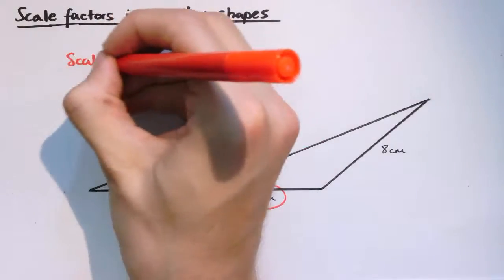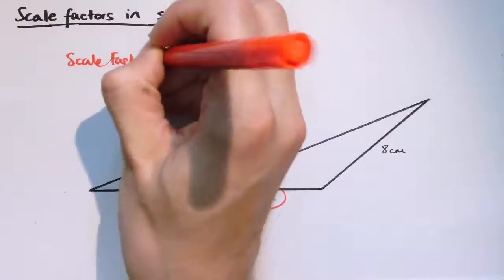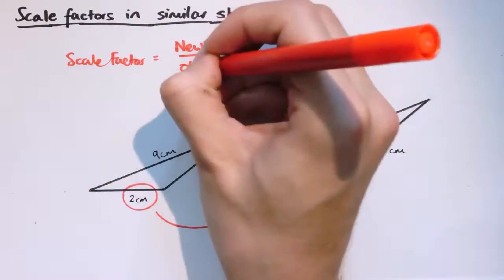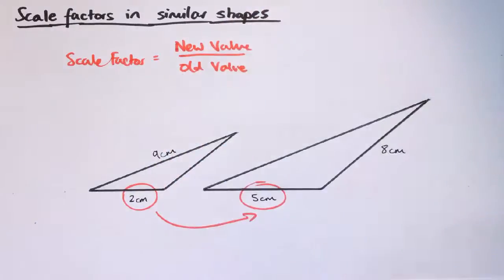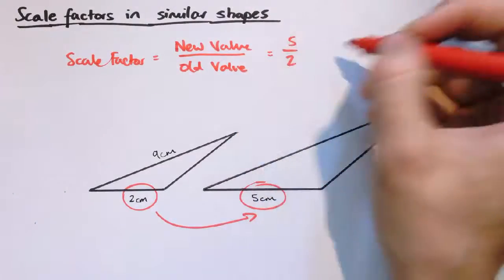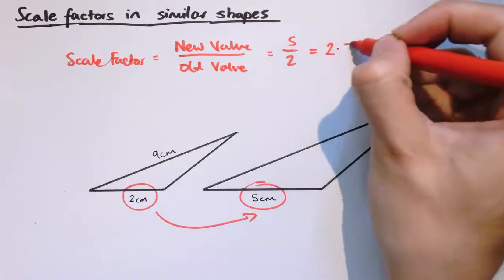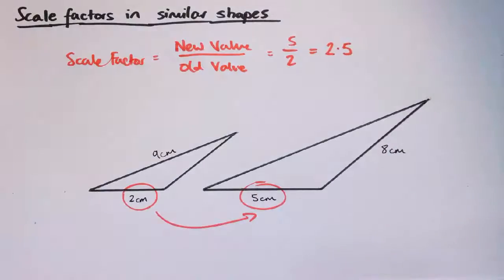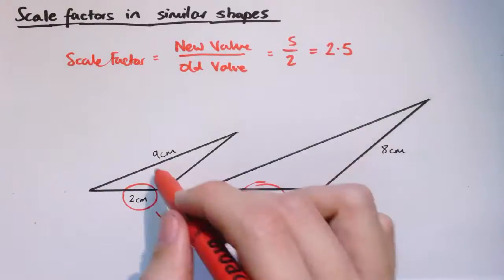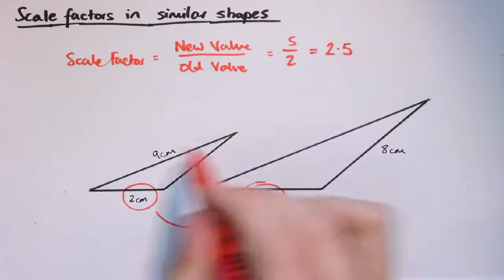The scale factor as we know from previous videos is the new value divided by the old value. And here we're thinking of the new value as five centimetres and the old value as two centimetres. So the scale factor is five over two or two point five. And once you've worked out the scale factor, because the shapes are similar, then every length in here is just two and a half times as big as the corresponding length over here.